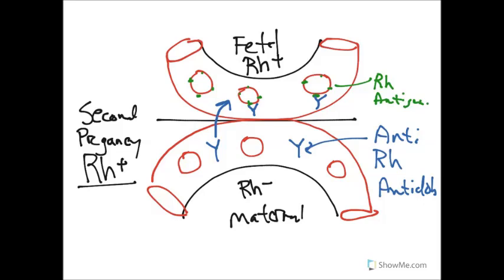The antibody binding causes agglutination. The antibodies have macrophage binding sites and complement binding sites, which attract macrophages and result in destruction of the fetal red blood cells. As these cells die, bilirubin builds up and the baby may be born jaundiced. The baby becomes anemic, and in severe cases it is quite possible the child may die or die shortly after birth.